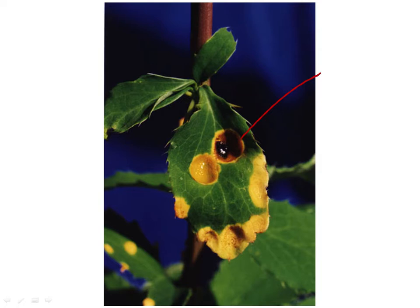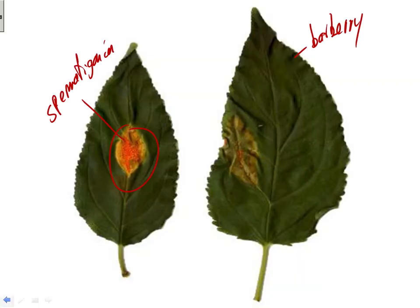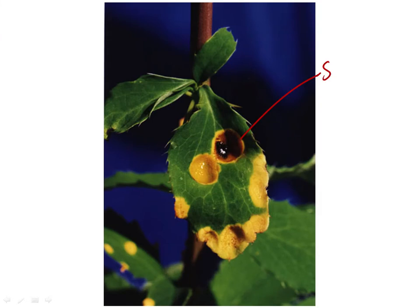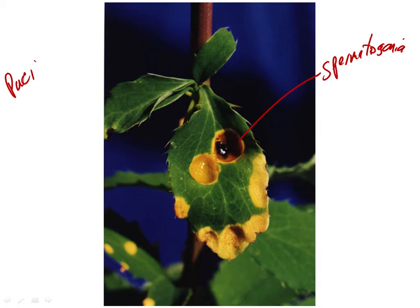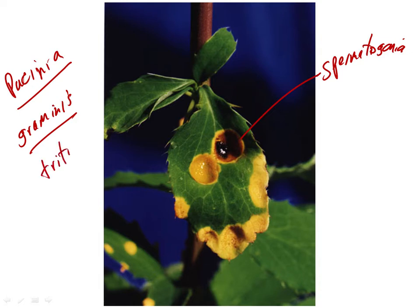The organism is Puccinia graminis — the genus meaning a rust of grasses, and the species name graminis indicating a parasite of grasses. We're also using a third name, tritici, to indicate that this particular race of Puccinia graminis is a parasite of wheat. There are other races that specialize on oats and the other grains.